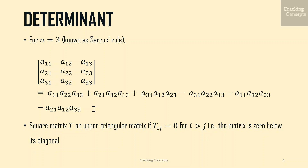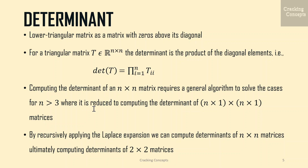We call a square matrix T an upper triangular matrix if T_{ij} equals 0 for i greater than j, that is the matrix is zero below its diagonal. Analogously, we define a lower triangular matrix as a matrix with zeros above its diagonal. For a triangular matrix T belonging to the n×n dimension space, the determinant is the product of the diagonal elements, i.e. det(T) equals the product from i=1 to n of T_{ii}.